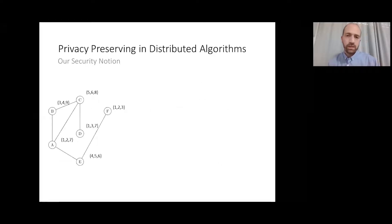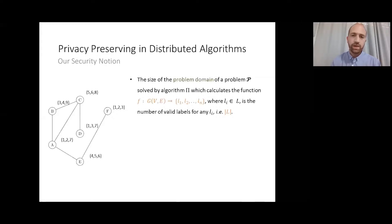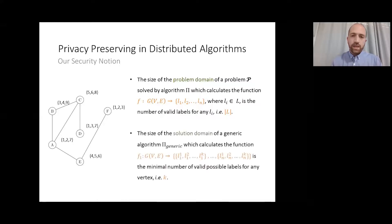Putting it in a more formal way, we define the problem domain as the range of values of nodes' actual labels, and the solution domain is the set of labels from which each node will pick its label. For instance, in this graph, the problem domain is the range between 1 and 29, and the size of the solution domain is 3, since each node has three different optional labels.